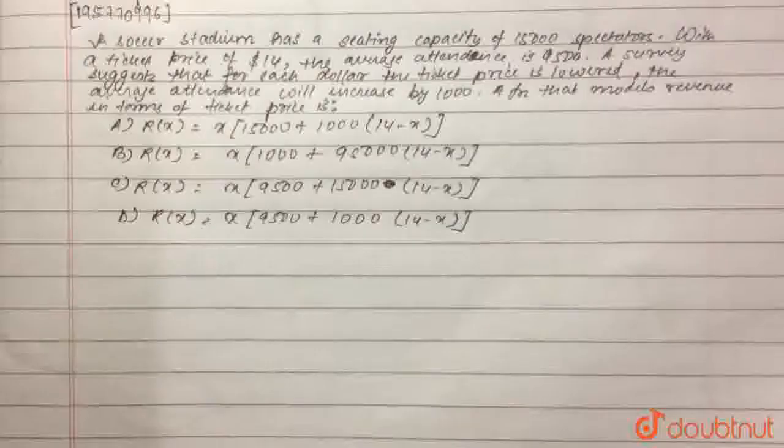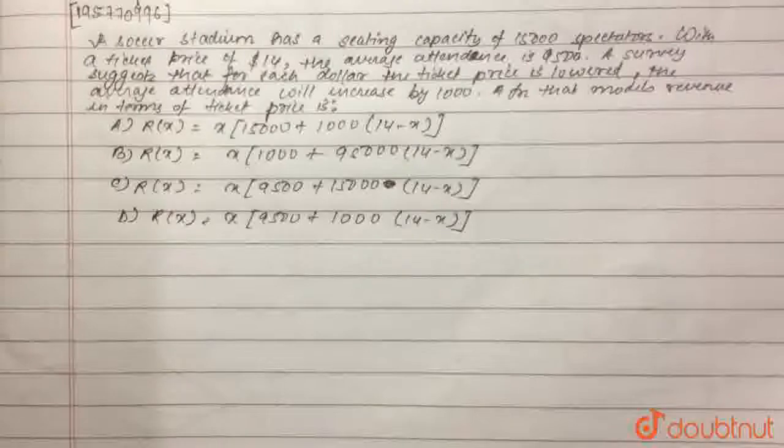So here the question states, the soccer stadium has a seating capacity of 15,000 spectators. With a ticket price of $14, the average attendance is 9,500.